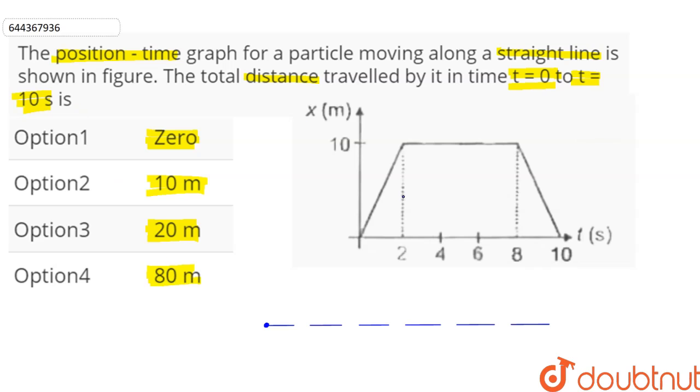So we can see that from the graph, from t equal to 0 to t equal to 2 seconds, the particle moves and at the end of 2 seconds the particle is at x equal to 10 meters. Then from t equal to 2 to t equal to 8, the particle stays there. And from t equal to 8 to t equal to 10, it comes back to x equal to 0.